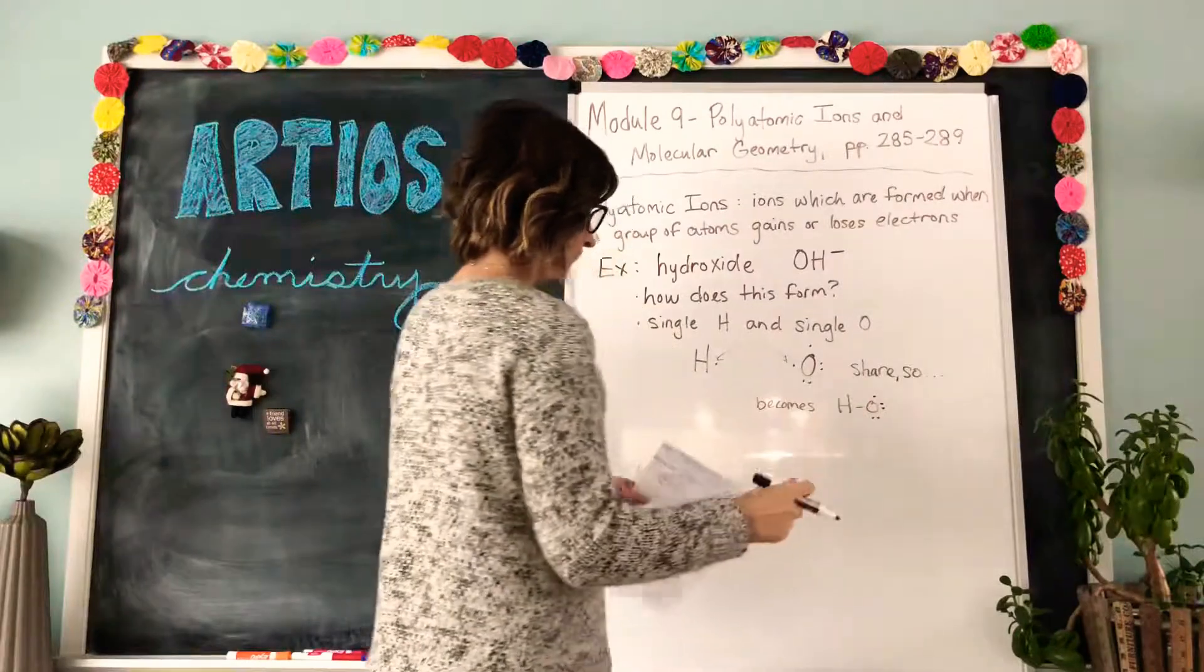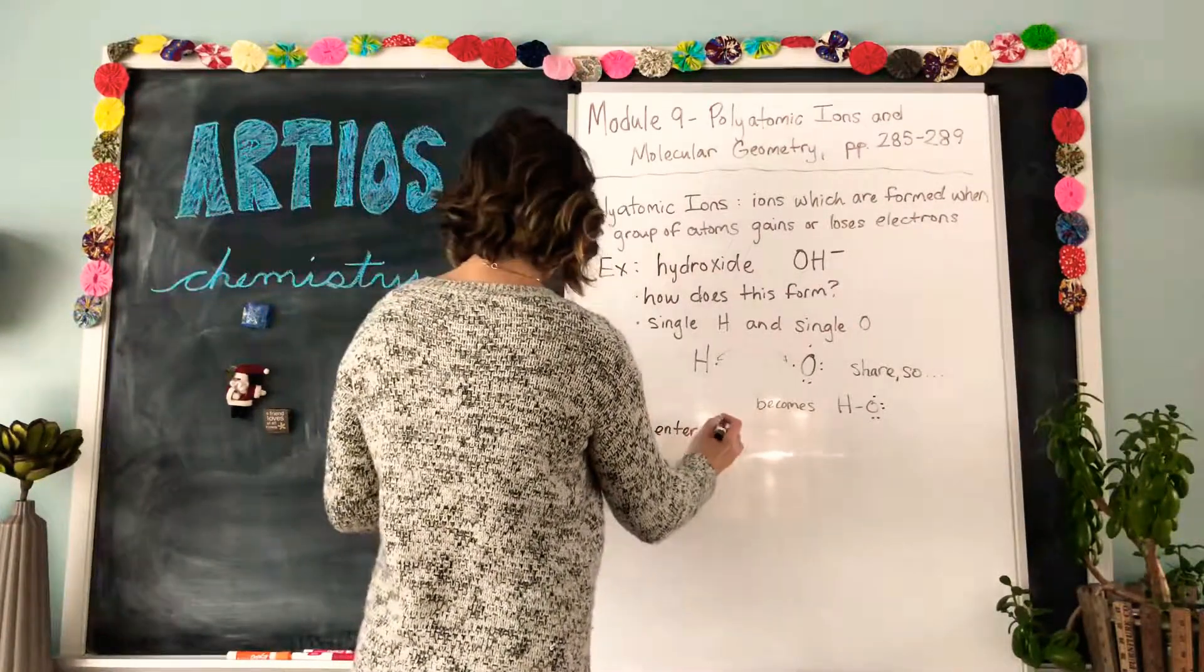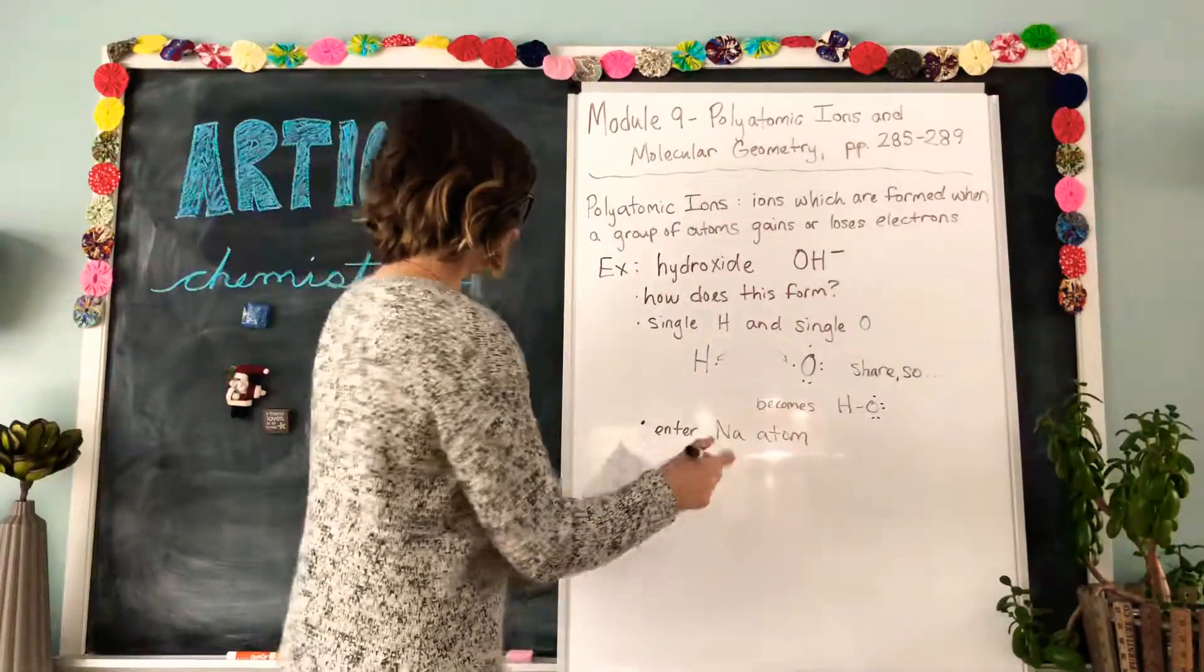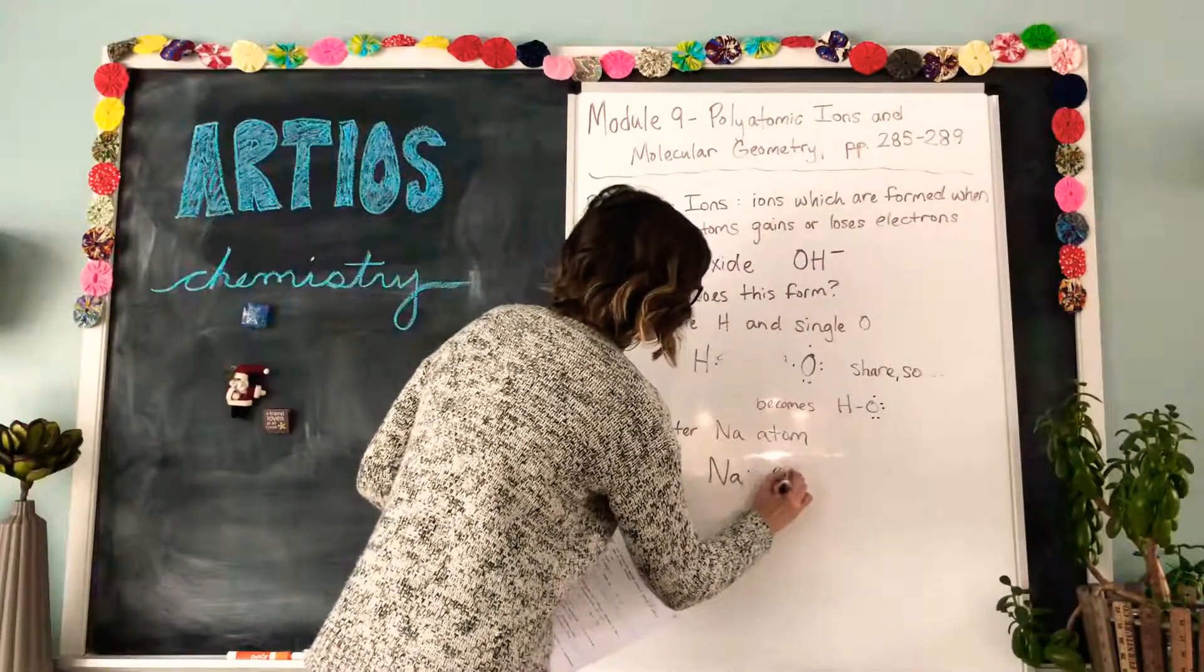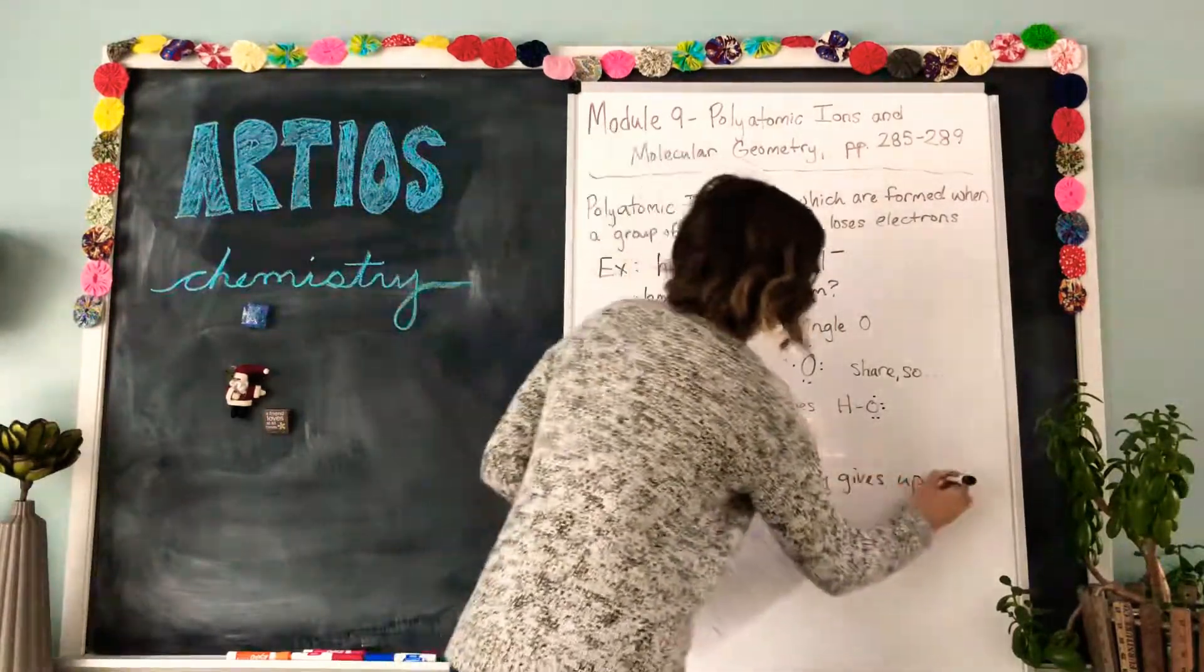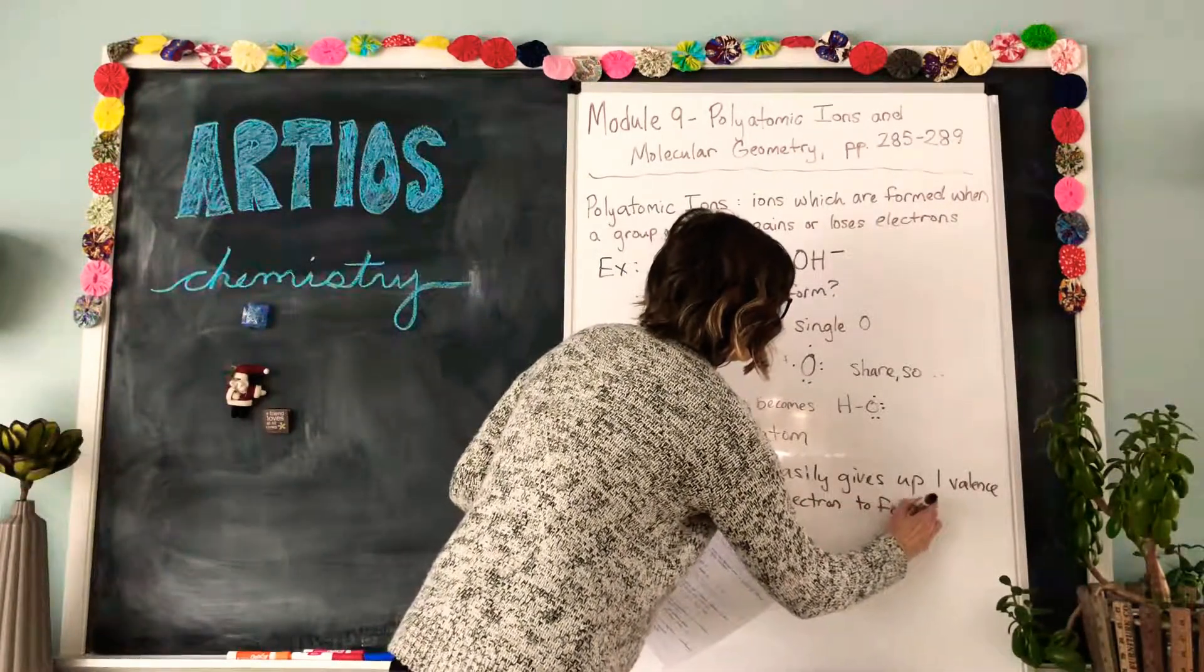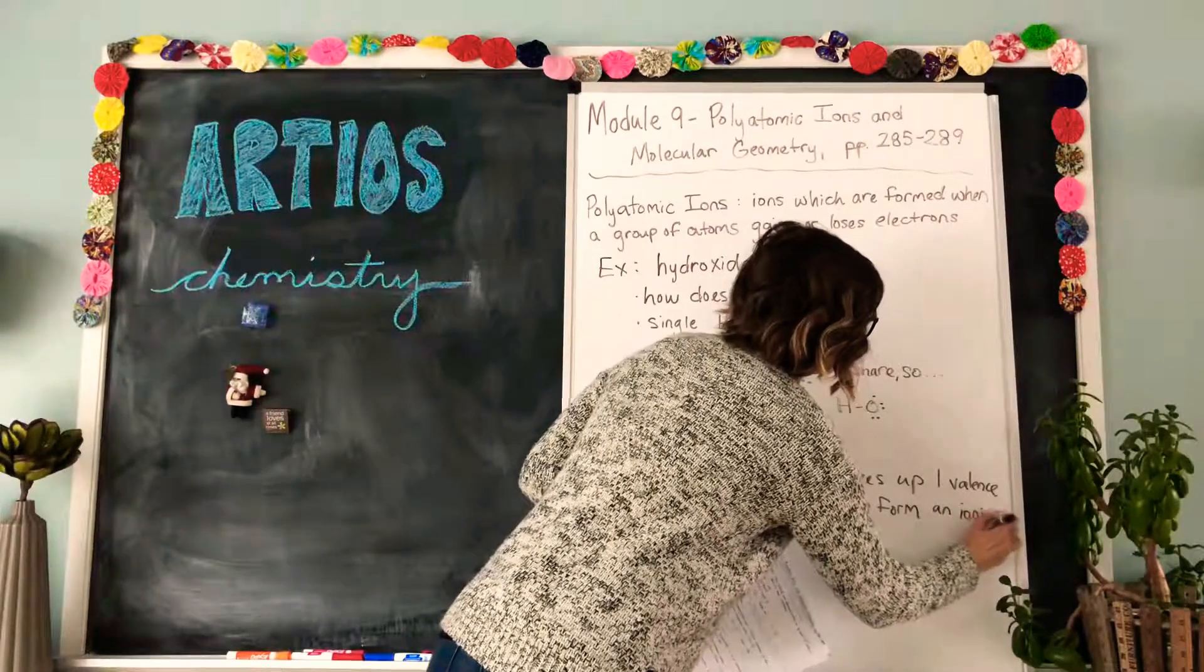So enter a sodium atom, this is just for example. If something comes along like sodium which has one valence electron, the sodium will easily give up one valence electron to form an ionic compound.